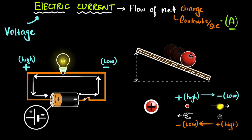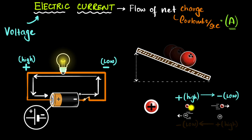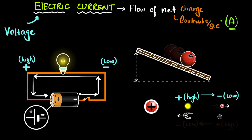Which direction should we call 'downhill' for charges? We decided to use positive charge as our reference. Whichever direction positive charges naturally tend to go, we call that 'down in potential.' Because of this convention, positive charges go down the electric potential by definition, while negative charges end up going up the electric potential — not because they're going to a higher potential energy region, but because our reference is defined from the perspective of a positive charge. Electrons, which are negative charges, therefore have a natural tendency to go up the electric potential.